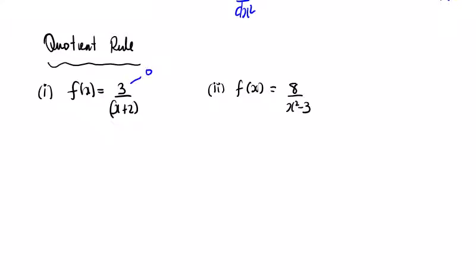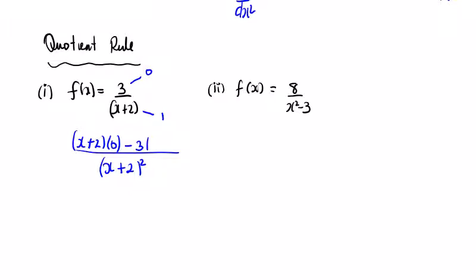Let's follow the same procedure for the quotient rule — differentiate each. The quotient rule: the bottom squared on the bottom, and then we're talking about the bottom by the top differentiated, minus the top by the bottom differentiated. That's going to give me just minus 3 on top, on the bottom x plus 2 to be squared — my first derivative.